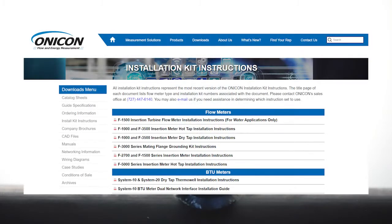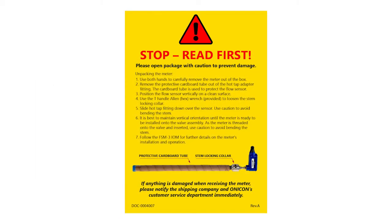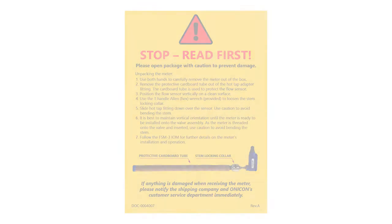Onacon offers a wide range of installation hardware kits and we recommend their use as they are specifically designed for Onacon Flow Meters. Before proceeding with installation, please review the yellow instruction card provided with your meter in its entirety and follow the steps.